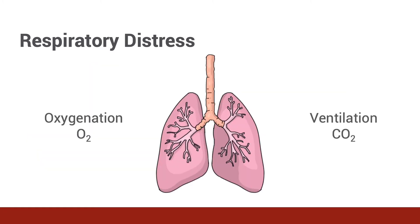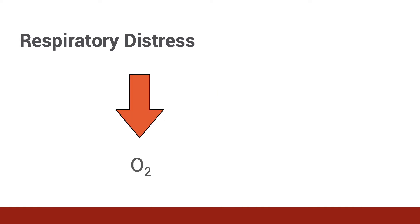There is a spectrum of respiratory distress. The body depends on oxygenation and ventilation to breathe. Oxygen exchange occurs in the lungs, and if there is damage to the lung tissue as seen in infection, oxygenation may be affected. Ventilation is the process of air moving in and out of the lungs. Problems with ventilation can lead to alterations in carbon dioxide. You must recognize the symptoms of respiratory distress and start treatment immediately to prevent hypoxemic respiratory failure or hypercapnic respiratory failure.